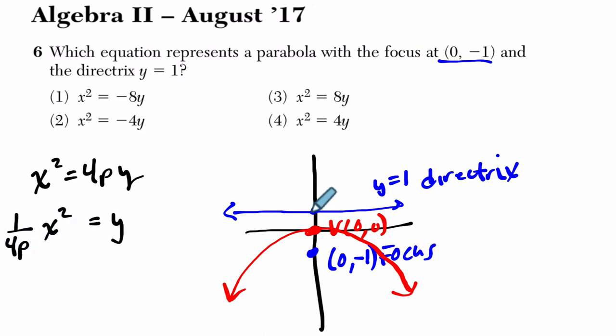p is the absolute value of the distance here. The absolute value of p is the distance between the vertex and directrix or vertex and focus. In other words, I count this distance here, 1, or this distance here, 1. That's the absolute value of p.